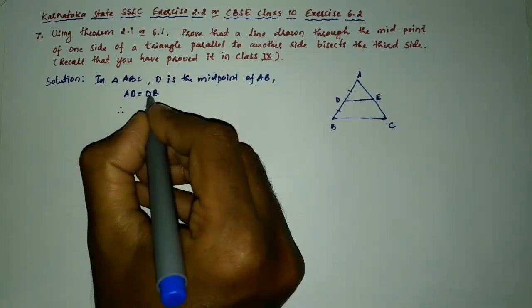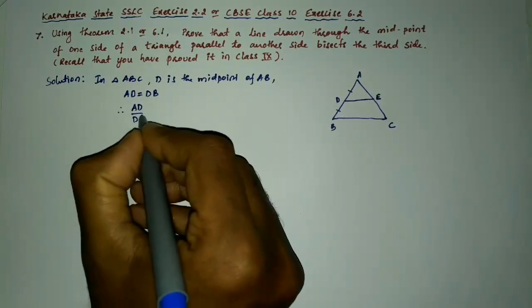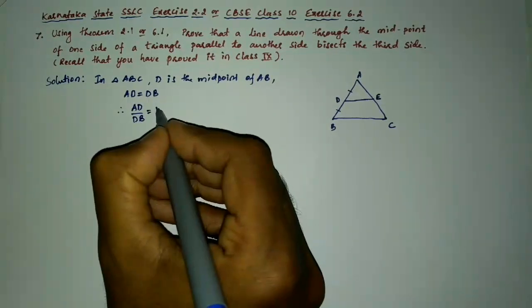So therefore if I transform this DB from RHS to LHS it will become AD by DB is equal to 1.